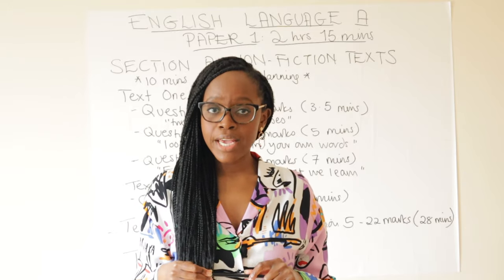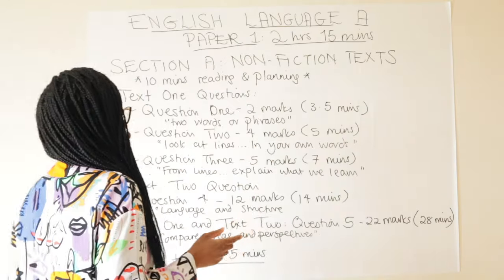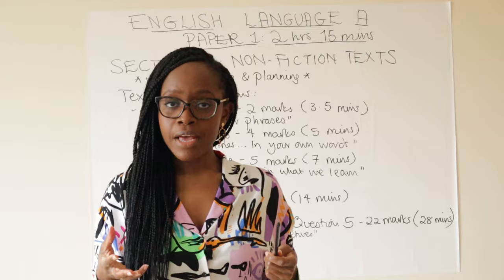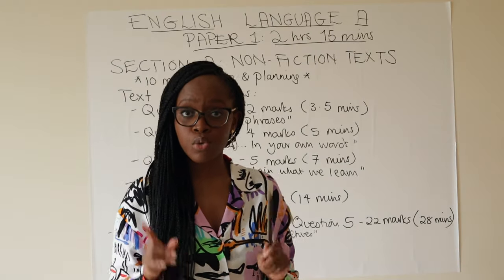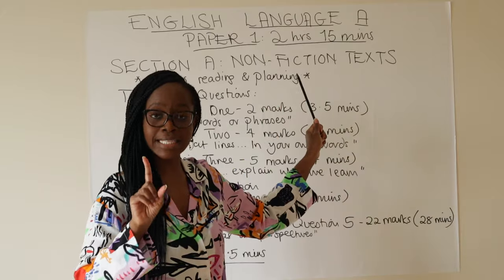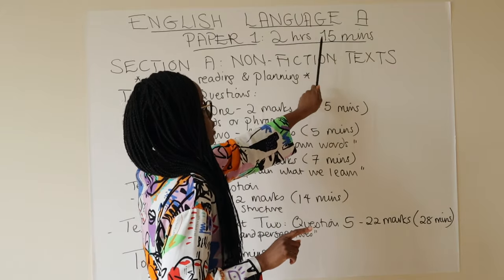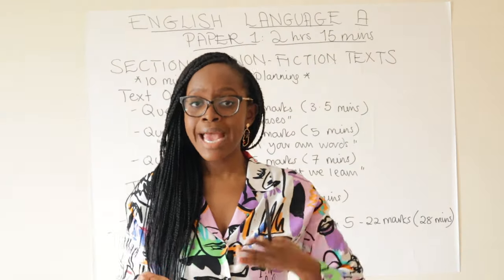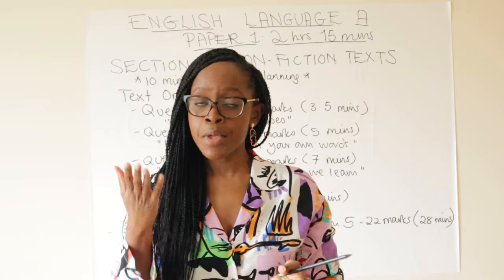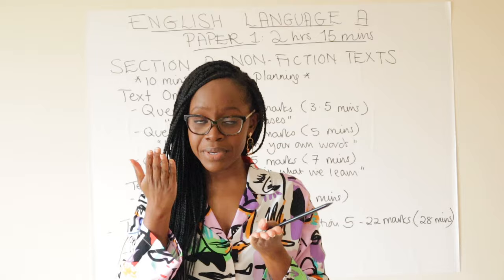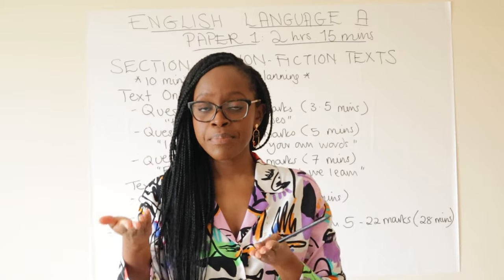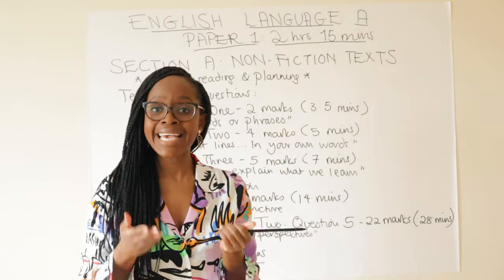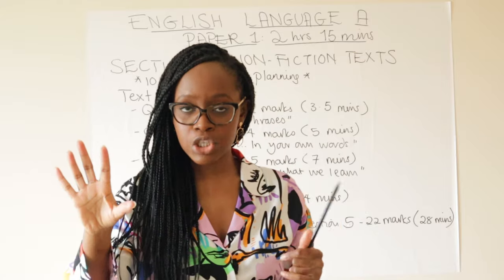Let's begin by talking about English Language Paper 1. As you can see behind me, I've sketched out a walkthrough of what to anticipate for Section A — the first half of the paper. The entire paper, covering both Section A and Section B, is two hours and 15 minutes. Since both sections are worth equal marks, you want to split this time evenly.